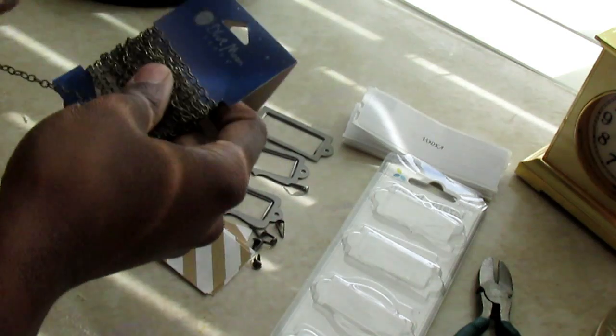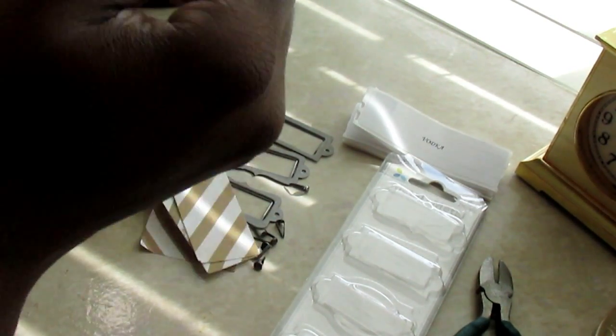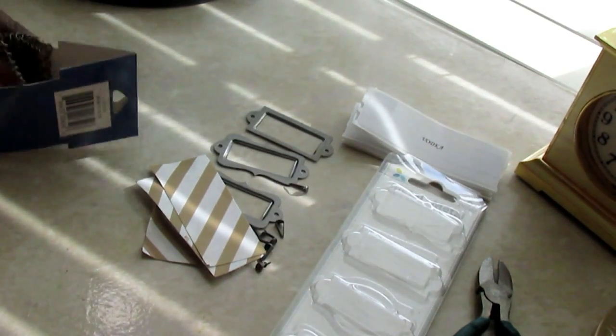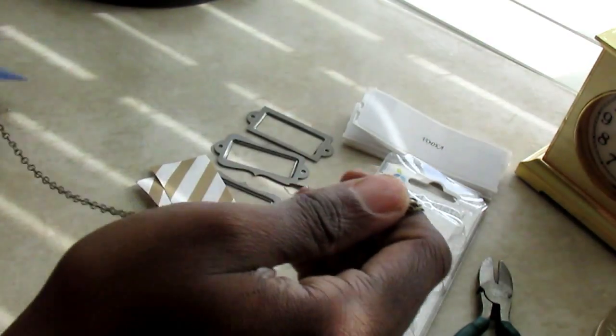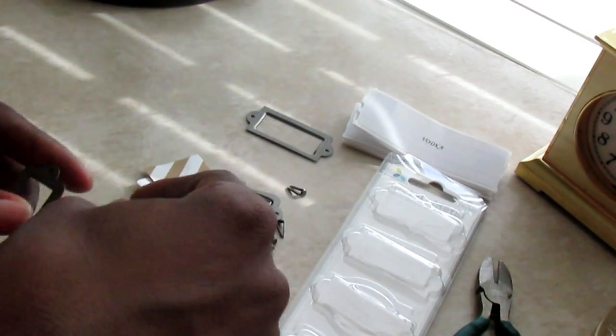So the first thing that you need to do when making these tags is that you need to determine how long you want your chain to be. And basically, that's just going to determine how low the tags will hang on your decanters.